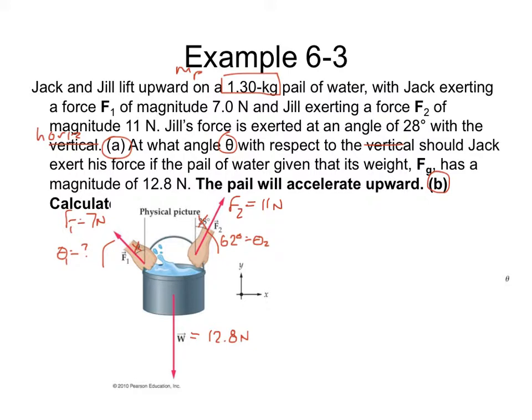Part B, which got cut off in the problem, is going to ask us to calculate the acceleration of the pail. That will be covered in a subsequent video. But for part A, we're just going to find out what Jack's angle has to be.